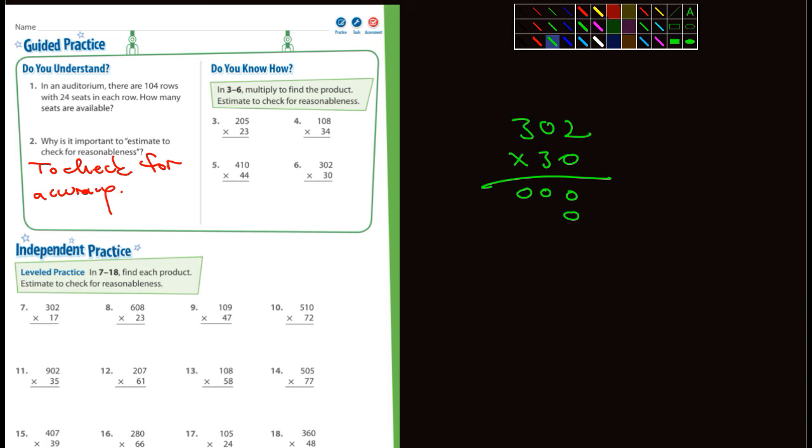And now we start with three times two. Well, what's that? That's six. And then three times zero, well, what's that? Zero. And then three times three is nine. Now we just simply add it up. Zero, six, zero, nine. Nine thousand and sixty is the answer for number six.